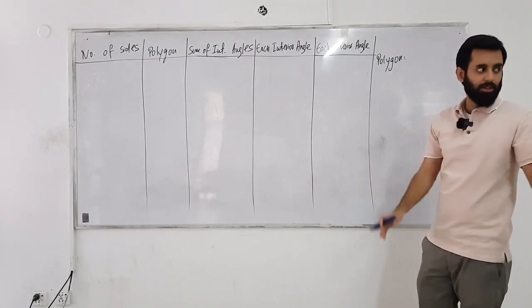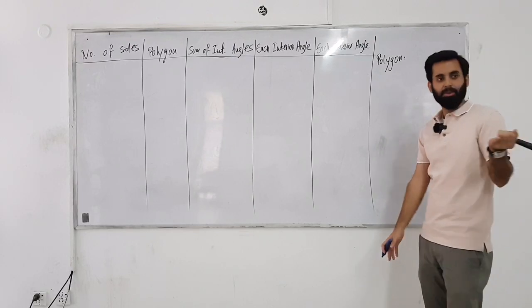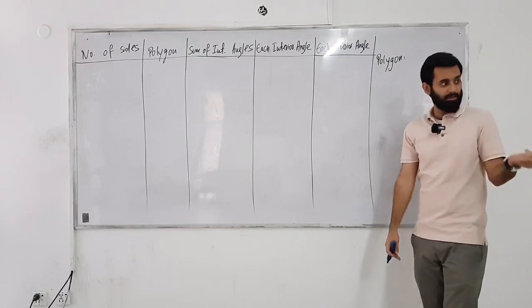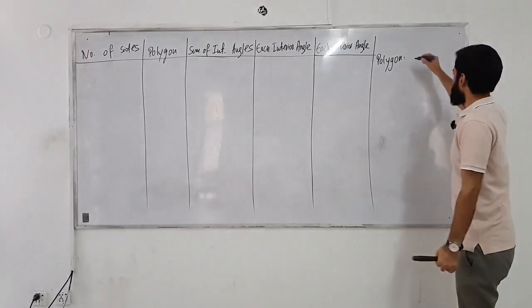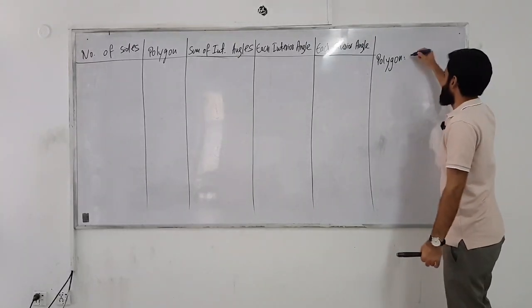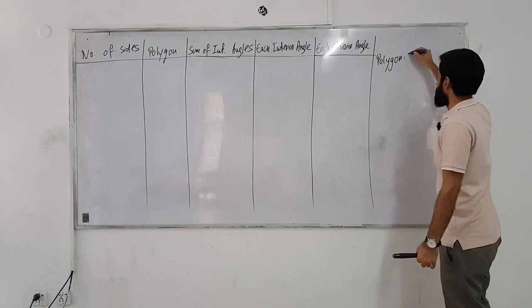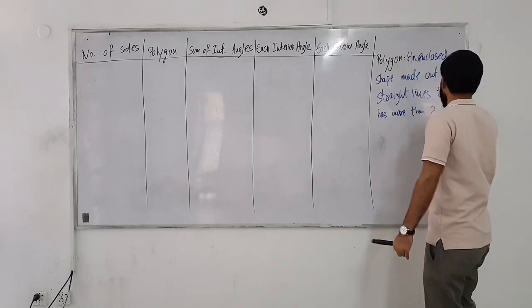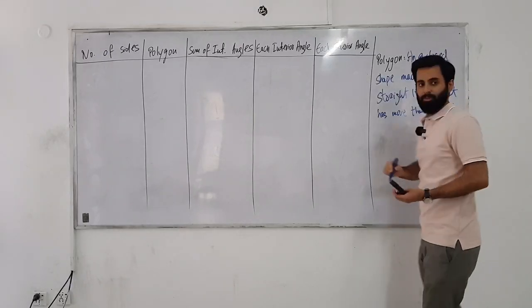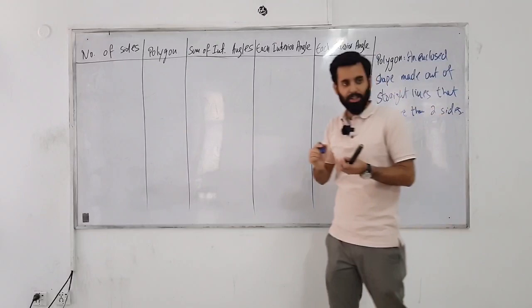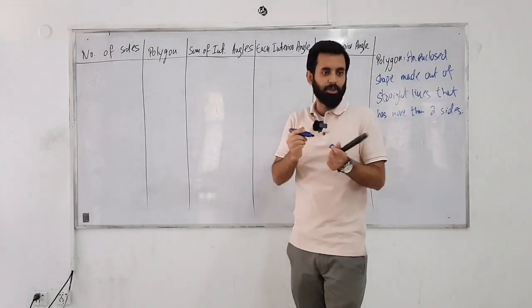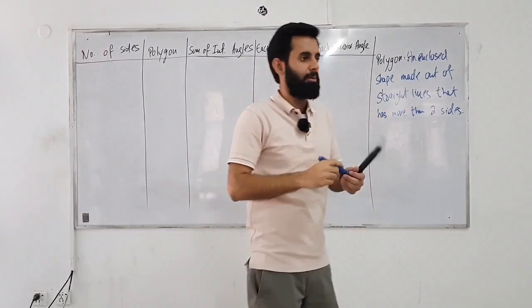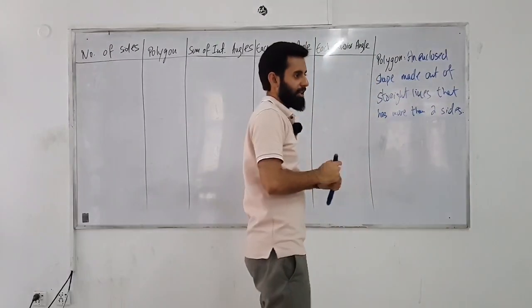So a three-sided polygon is called a triangle. Let's write the definition down first: an enclosed shape that has more than two sides, and remember, it is made out of straight lines.